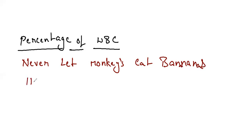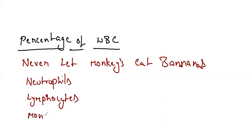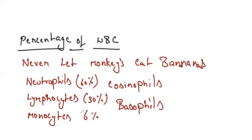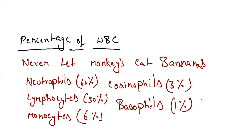Never let monkeys eat bananas — N for neutrophils, L for lymphocytes, M for monocytes, E for eosinophils, B for basophils. Neutrophils are 60%, lymphocytes are 30%, monocytes is 6%, eosinophils is 3%, and basophils is finally 1%. If you count, you will be getting 100. So this is the percentage of WBC — to remind: never let monkeys eat bananas.